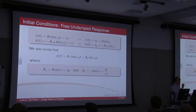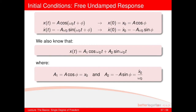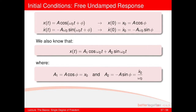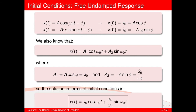So the initial displacement at time zero equals a1. For a2, we know it equals minus A sine phi, and if we divide that by omega-zero, that's your a2, expressed in terms of the initial velocity. So a2 equals x-dot-zero divided by omega-zero. For a free undamped system with given initial conditions, you can go straight to the solution knowing that a1 equals x-zero and a2 equals x-dot-zero over omega-zero.